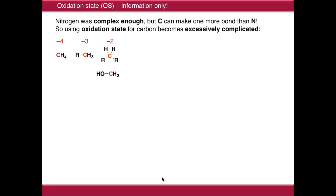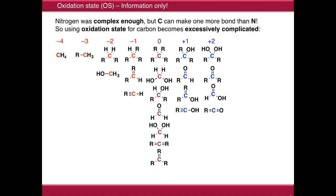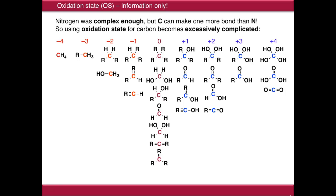We then incorporate things like alcohols at minus one, and alkenes and alkynes also fall at minus one. Then zero, plus one, plus two, plus three, and plus four, where we have four bonds to things like oxygen. So it's become incredibly complicated using oxidation state, and as a result organic chemists tend not to use oxidation state for organic molecules.